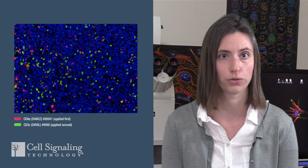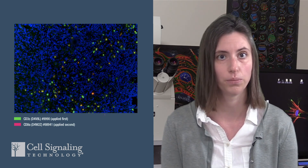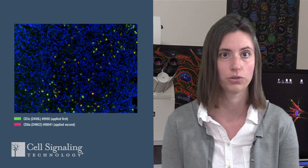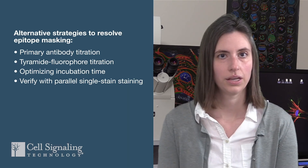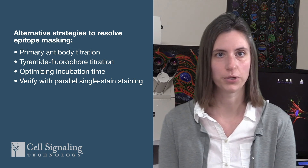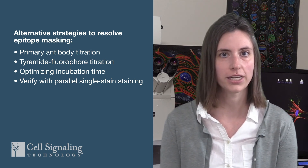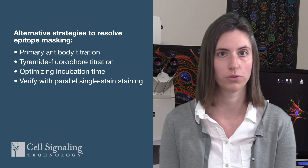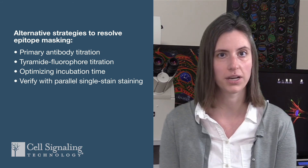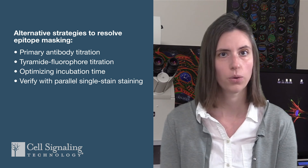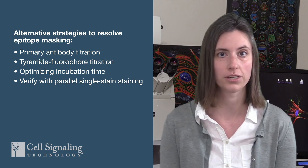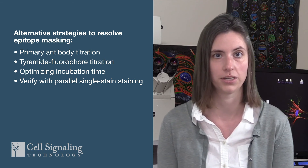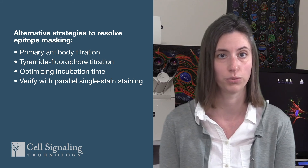One potential approach to resolve epitope masking is to switch the order of the primary antibodies. In our example, moving CD3 first in the staining order was able to restore the expected overlap between CD3 and CD8. If switching antibody order doesn't successfully resolve your epitope masking problem, you can try titration of the primary antibody, titration of the tyramide fluorophore conjugate, and/or optimizing incubation time for either or both of these. We also recommend performing single staining in parallel with the multiplex staining to ensure there aren't significant increases or decreases in the number of cells staining positively for each protein of interest.